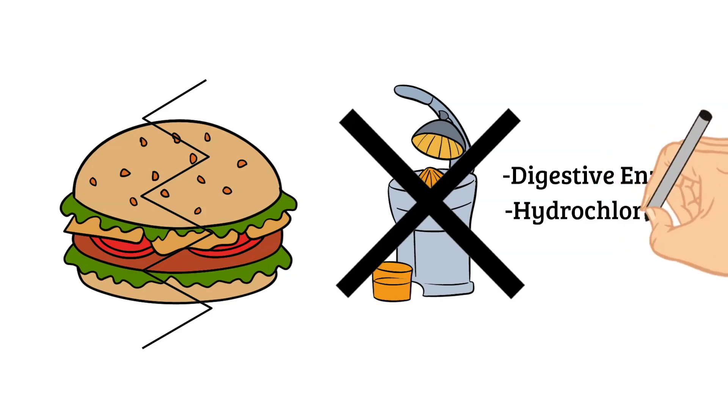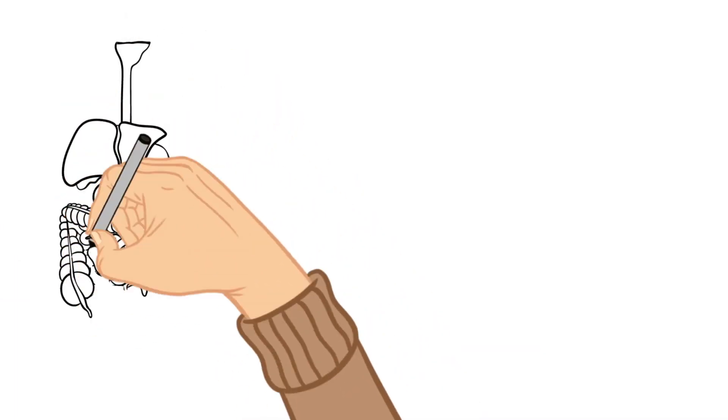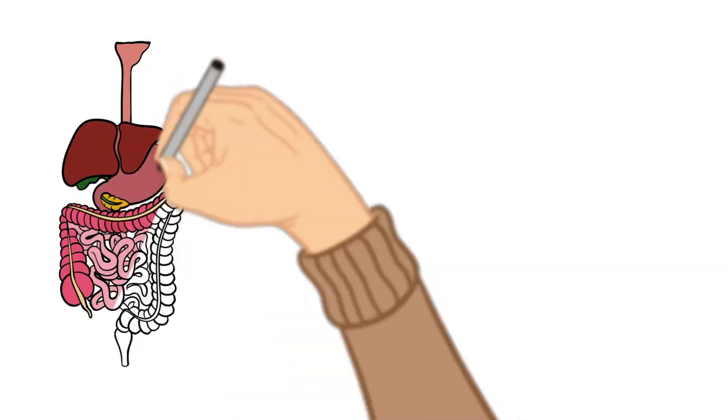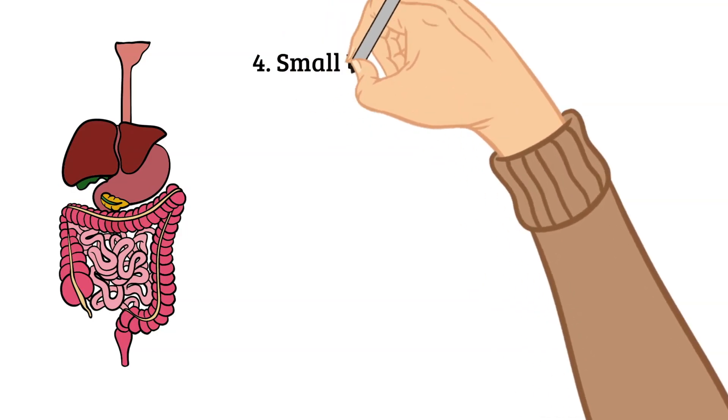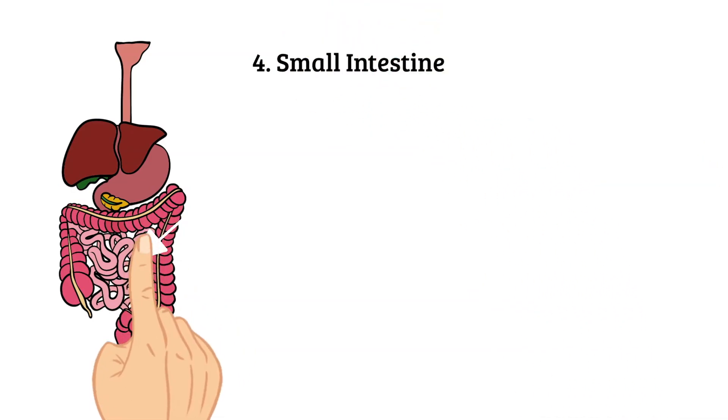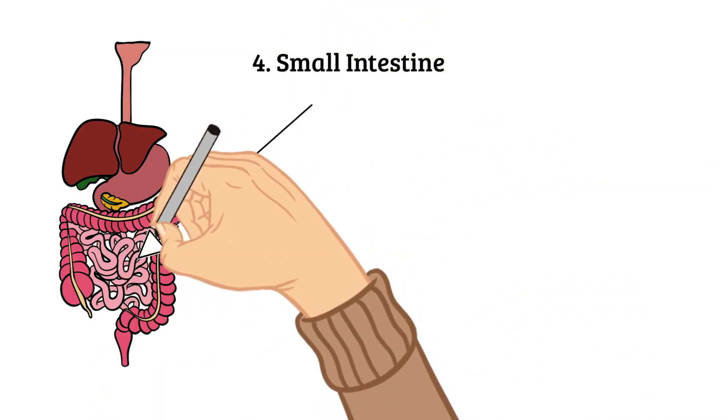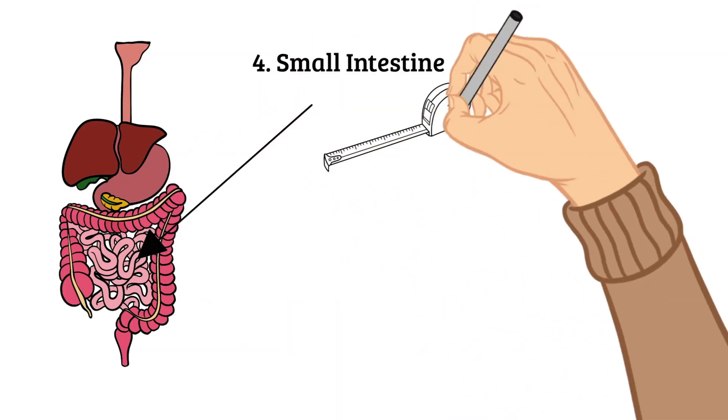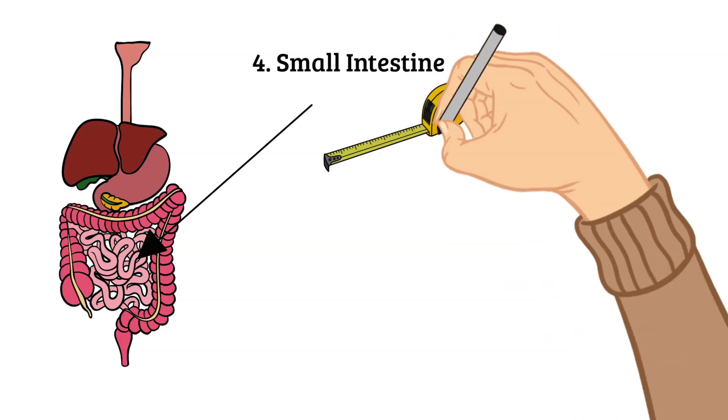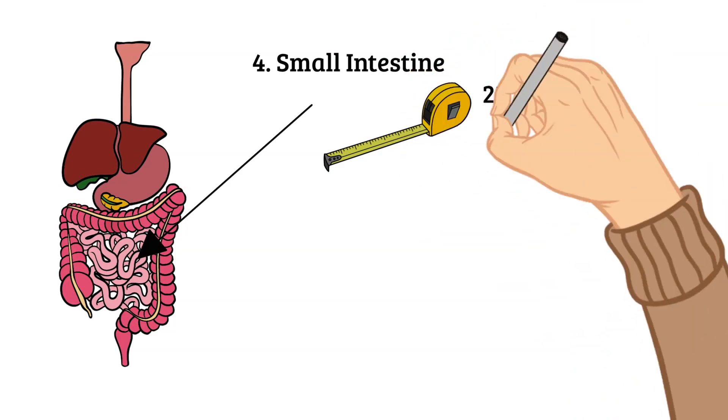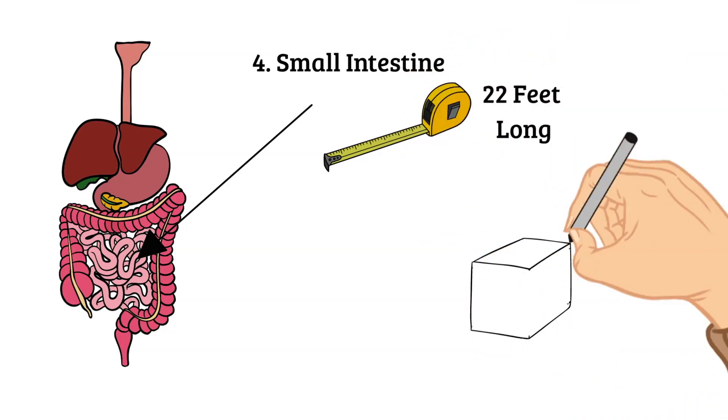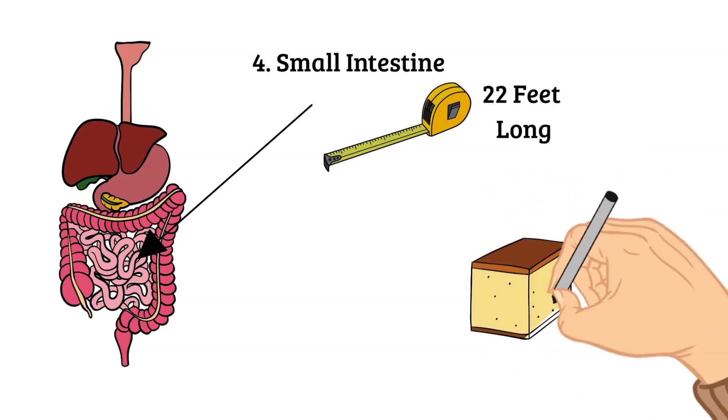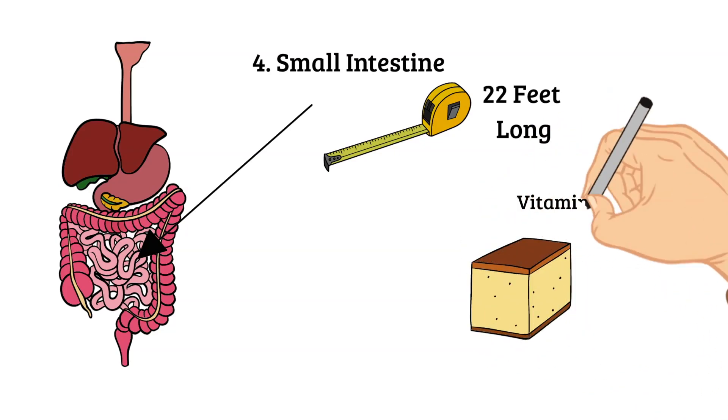Next up is your small intestine. This is located beneath your stomach, and if you stretched out an adult's small intestine, it would actually be 22 feet long. The small intestine breaks down the food mixture even more so your body can absorb the nutrients.